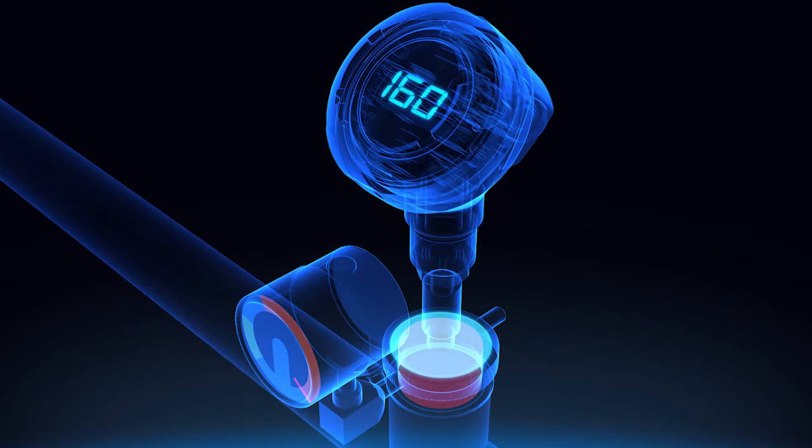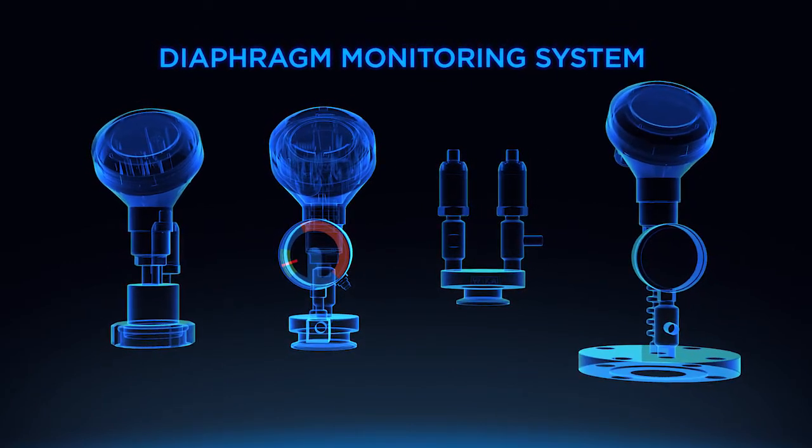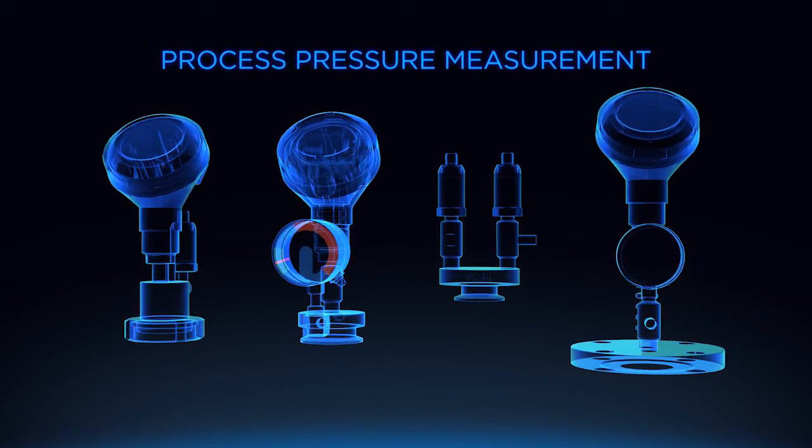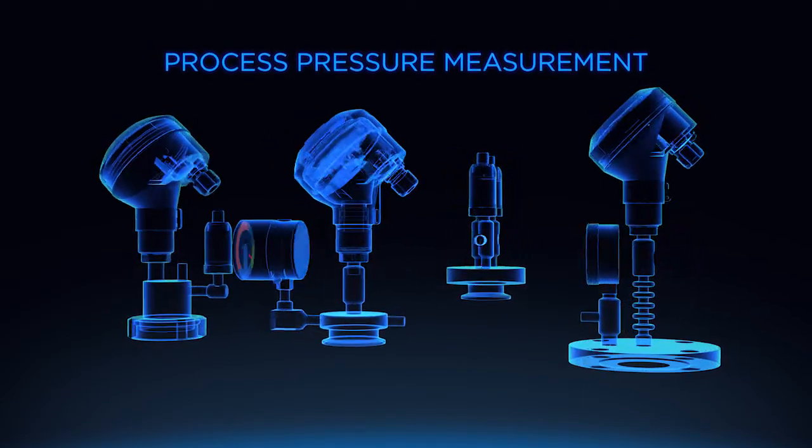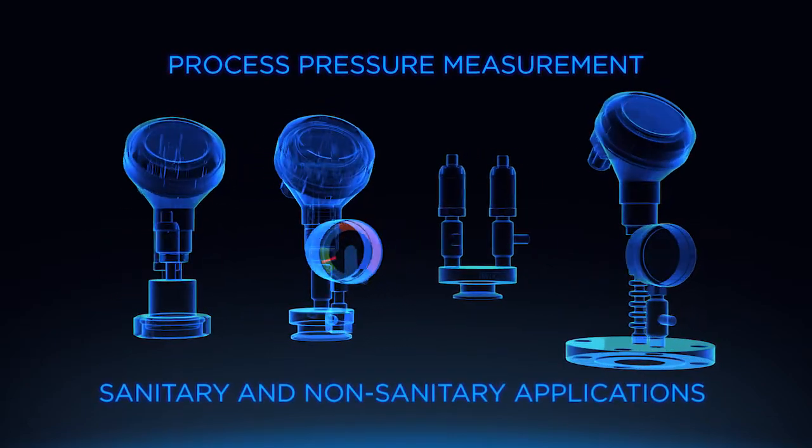The diaphragm monitoring system can be fitted with a pressure transmitter, switch, or gauge to monitor process pressure, and many variations are available to meet the specific demands of your sanitary and non-sanitary applications.